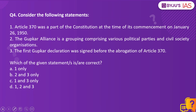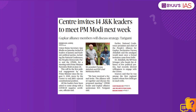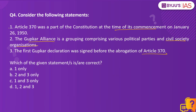Moving on to question number 4. Consider the following statements: Article 370 was a part of the constitution at the time of its commencement on January 26, 1950. The Gupkar Alliance is a grouping comprising various political parties and civil society organizations. The first Gupkar Declaration was signed before the abrogation of Article 370. The context is an article in the Hindu newspaper about the central government meeting leaders of political parties of Jammu and Kashmir, with a reference to the Gupkar Alliance. Statement 1 is correct, because Article 370, which gave special status to Jammu and Kashmir, was indeed part of the constitution at the time of its commencement on 26th January 1950.